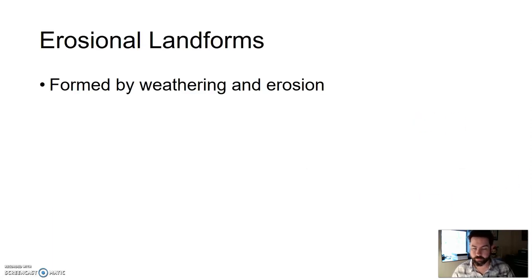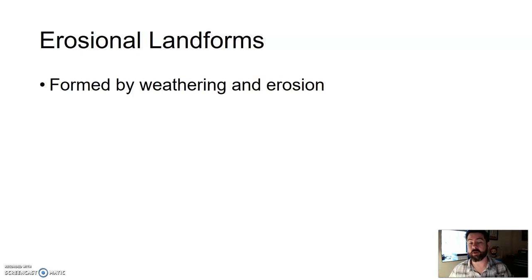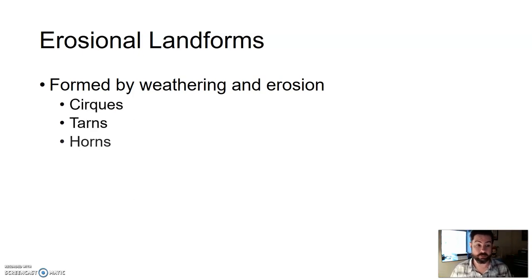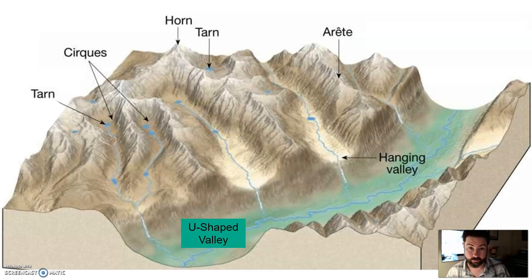Erosional landforms are formed by weathering and erosion. All of what you see here are caused by glaciers carving out something — taking material away, weathering and eroding material. What's left are these erosional landforms, such as cirques, tarns, horns, arêtes, glacial striations, and U-shaped valleys. All of these things are carved by material being taken away. What's left are these erosional landforms.